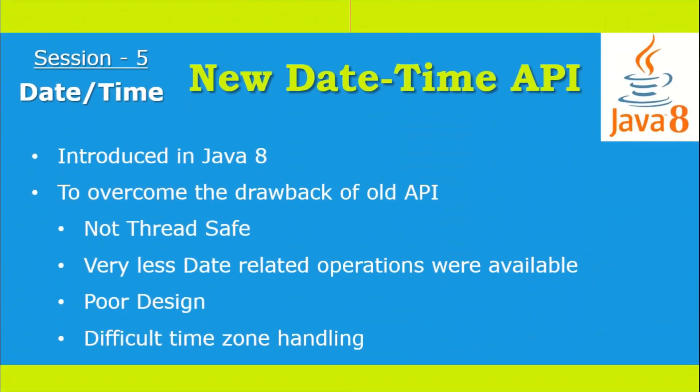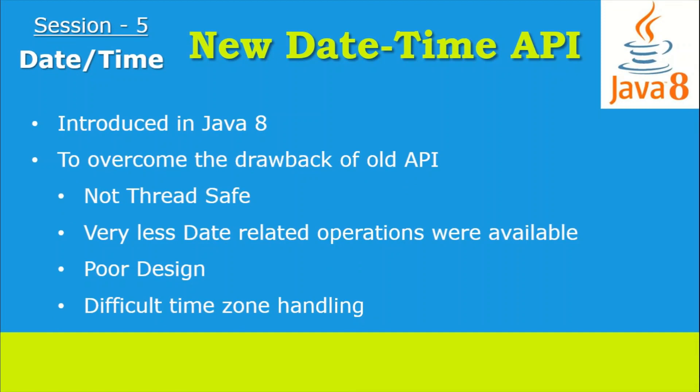So without any further delay, let's start. The new Date-Time API is introduced in Java 8 to overcome the drawbacks of the old Date-Time API. The first issue was thread safety — the old Date was not thread safe, but the new Date-Time API is made immutable and does not have a setter method, which makes it thread safe and usable in multi-threaded environments.